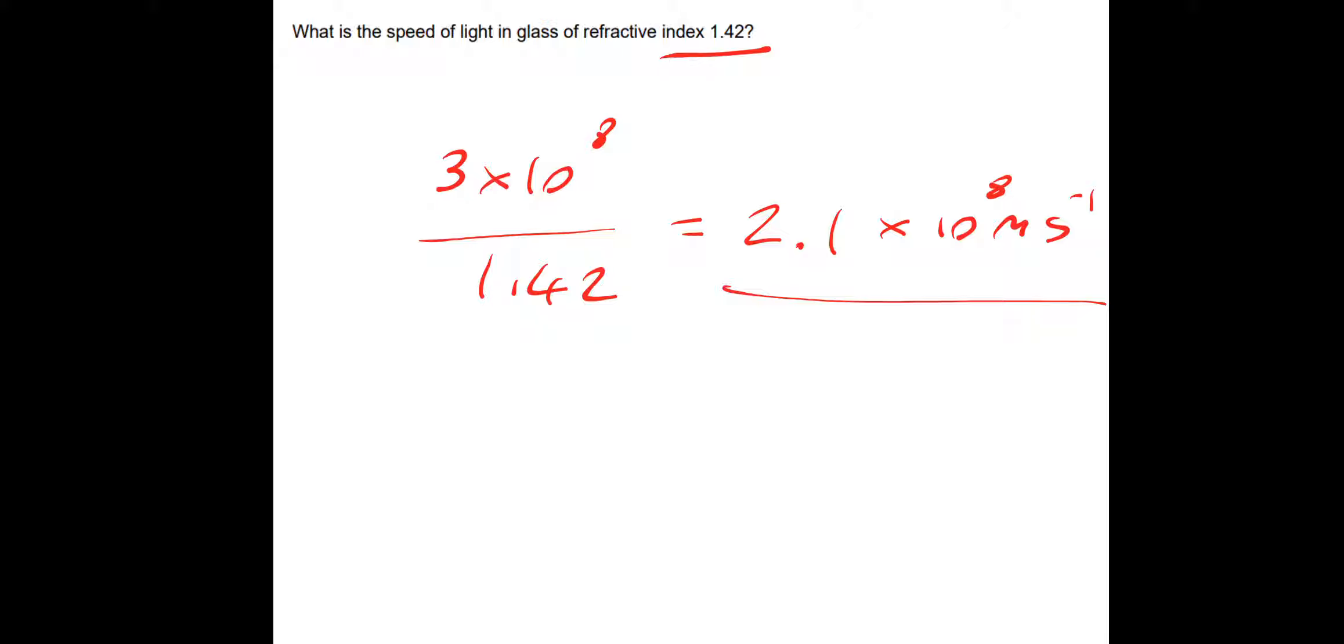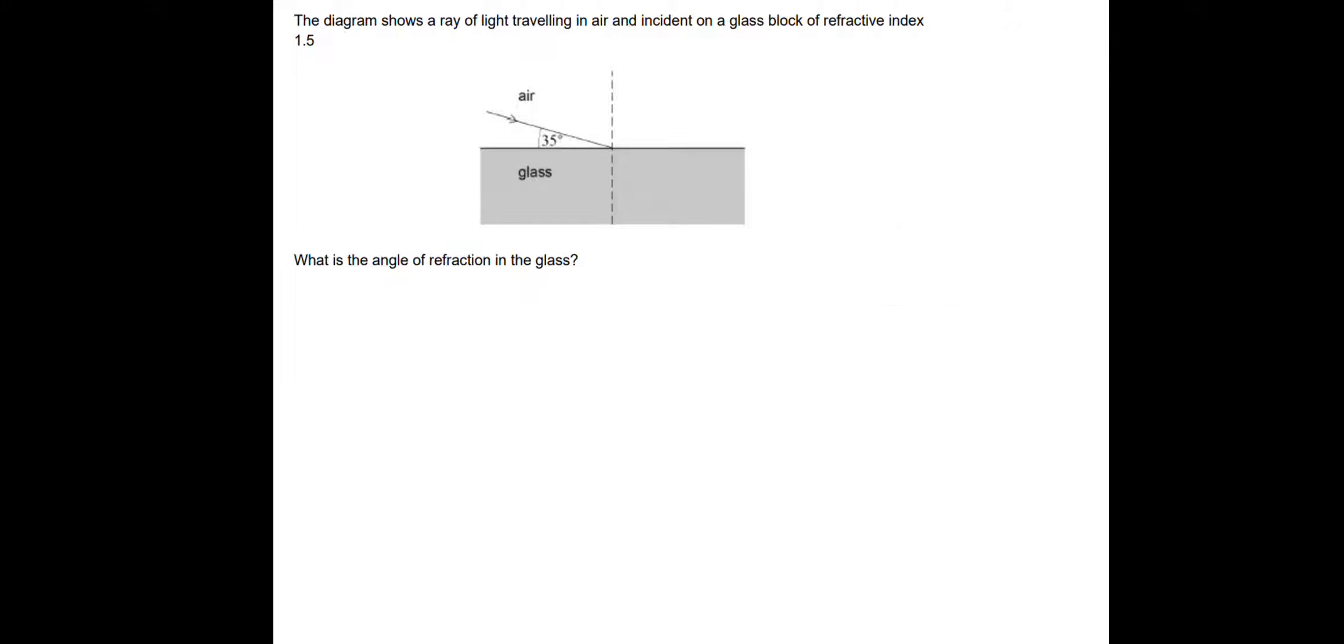Pretty straightforward, let's have a look at another one. If you want to pause and complete this one, then I'll take you through the answer. The diagram shows a ray of light traveling in air, incident on a glass block of refractive index 1.5. What is the angle of refraction in the glass?